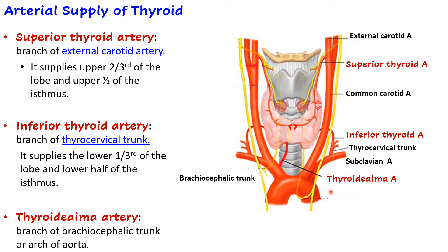Sometimes there is another artery known as the thyroidea ima artery, which is a branch either of the brachiocephalic trunk or a direct branch from the arch of aorta. This is not always present. So there are two main arteries that supply the thyroid gland: the superior thyroid artery and the inferior thyroid artery.